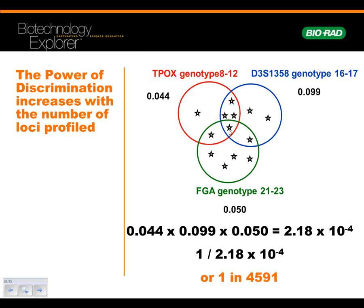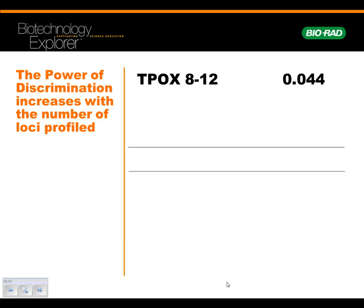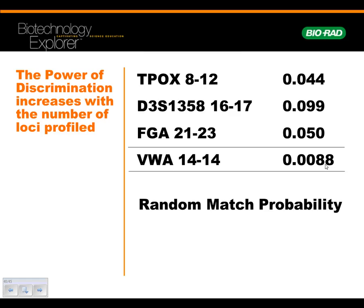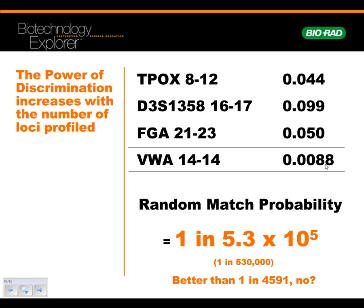One in 4,591 — that's not going to be good enough for a crime scene. We need to get a much larger number, maybe 1 in 2 billion or more. So you start adding on — this is the power of discrimination. You take yet another genotype called the VWA, and they test it as a 14,14. Multiplying that in, given the population frequency, you now end up with 1 in 5.3×10⁵, which is 1 in 530,000. Just by adding in more genotypes and alleles, your random match probability becomes way less likely that it was just a random match, and that's what you want for a crime scene.